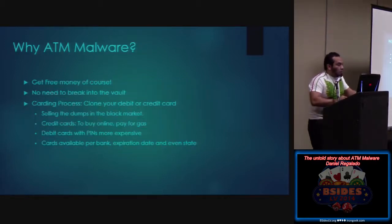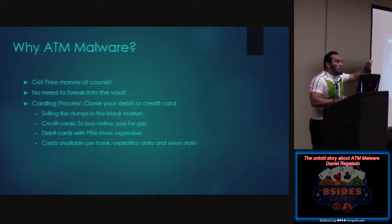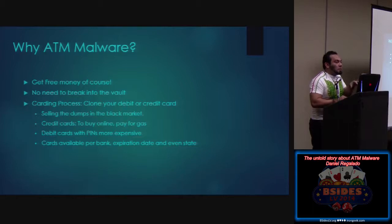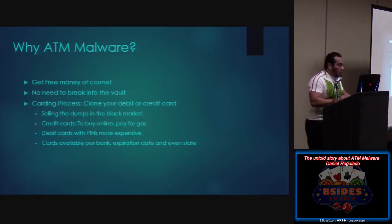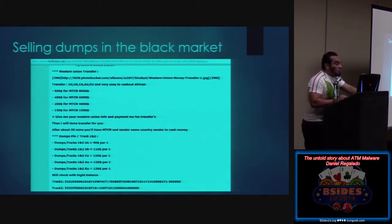Why ATM malware? Obviously, they get free money with no need to break into the vault — they just need to transfer the malware into the ATM. The carding process is to clone your debit card and sell it on the market. They can even sell debit card numbers per state or per country, because if someone in Chicago tries to withdraw in Minnesota it can be detected by the bank. So they group dumps based on country, state, and zip code. They sell track one and track two data, accepting payment via Western Union or now Bitcoin.